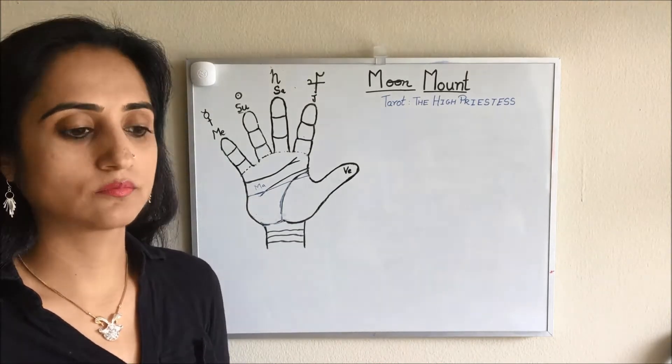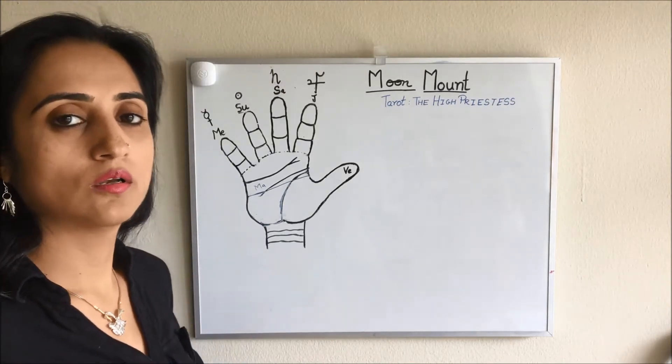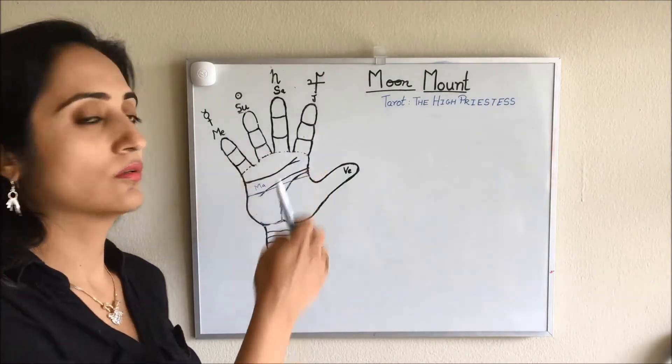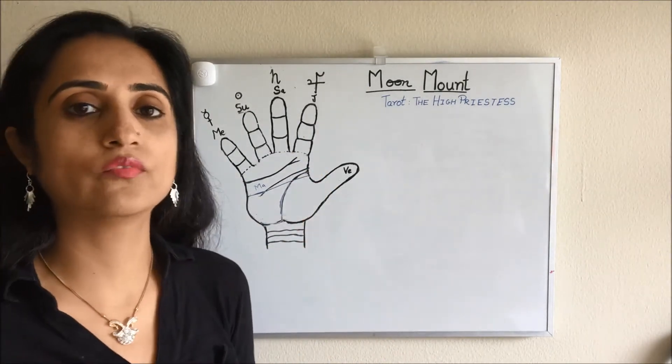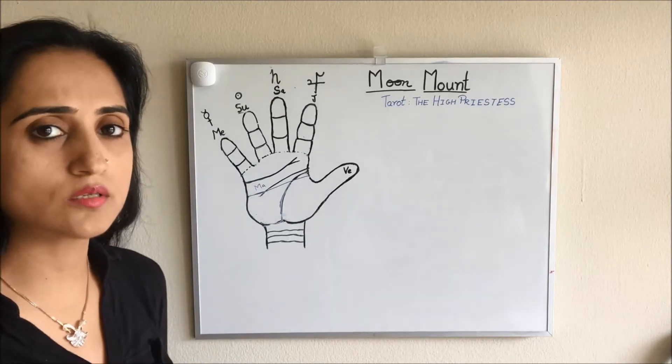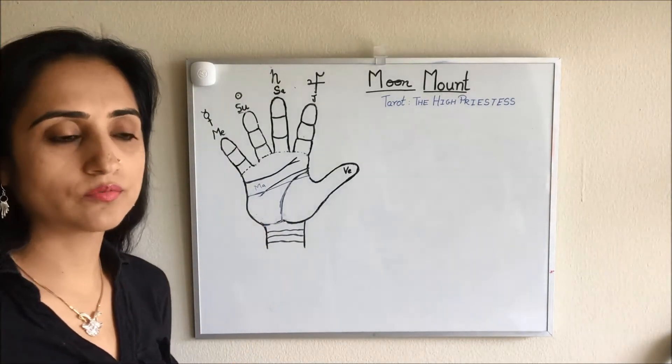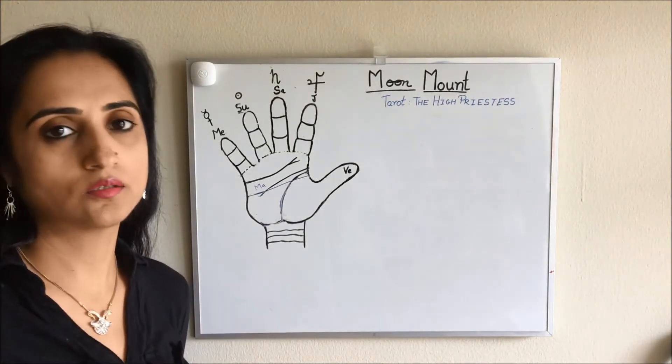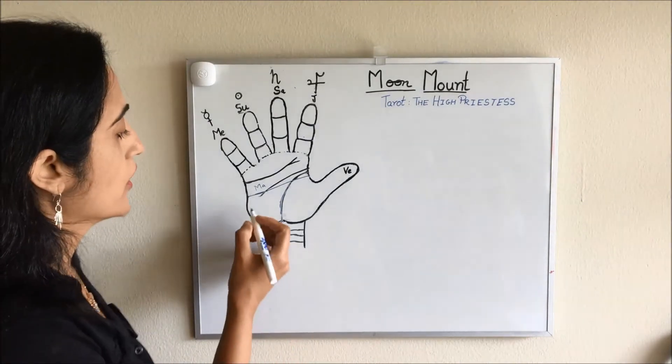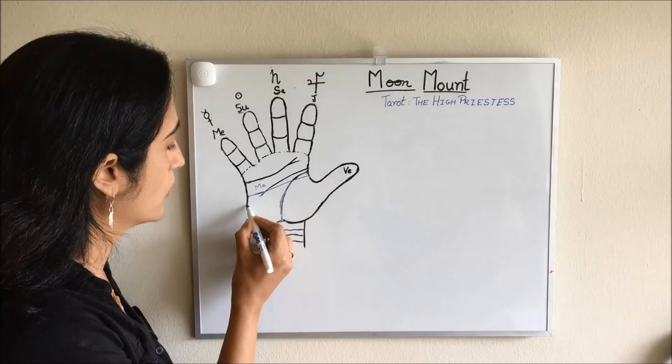We know that all fingers have rings. We have learned about Jupiter ring, ring of Solomon, and the girdle of Venus. Moon mount doesn't have a finger but it does have a moon ring like the other mounts. It feels like a semicircle on our percussion.